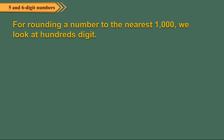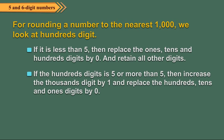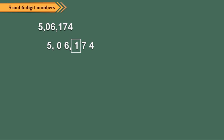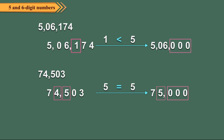For rounding a number to the nearest thousand, look at the hundreds digit. If it is less than 5, replace the ones, tens, and hundreds digits by 0 and retain all other digits. If the hundreds digit is 5 or more, increase the thousands digit by 1 and replace the hundreds, tens, and ones digits by 0. For example, in 506174 the hundreds digit is 1, so we replace the hundreds, tens, and ones digits by 0, giving 506000. In 745036, the hundreds digit is 5, so we increase the thousands digit 4 by 1 and replace the hundreds, tens, and ones digits by 0, giving 746000.